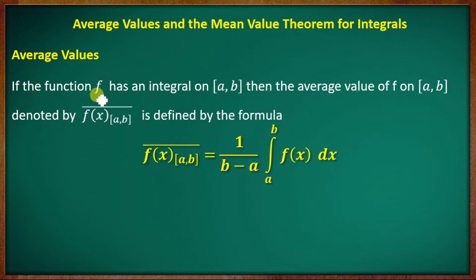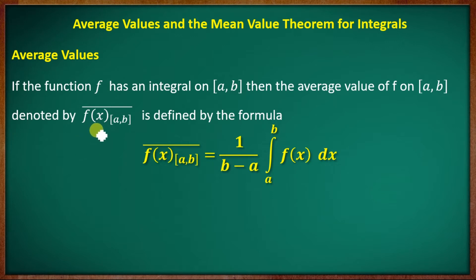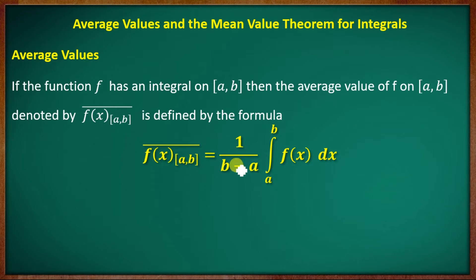If the function f has an integral on the closed interval [a, b], then the average value of f on the closed interval [a, b], denoted by f̄[a,b], is defined by the formula: f̄[a,b] = (1/(b−a)) ∫ₐᵇ f(x) dx.